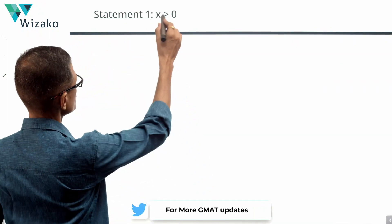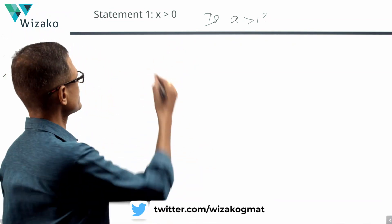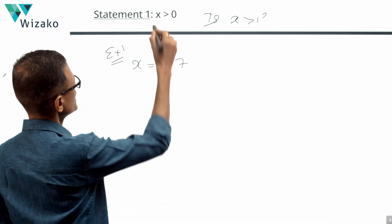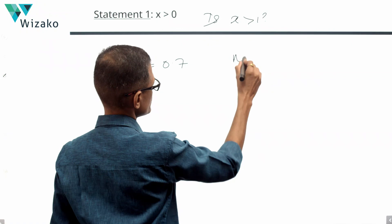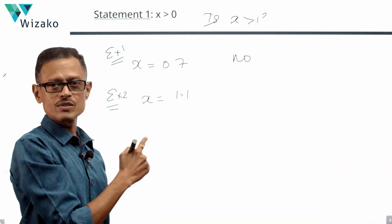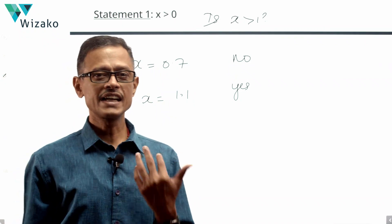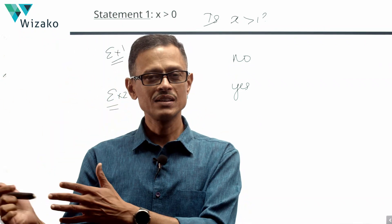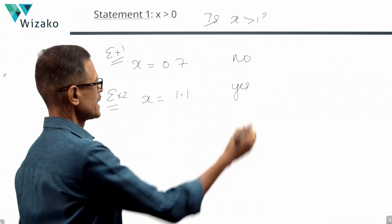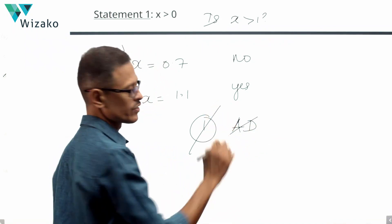Statement 1 says X is greater than 0. Our question is: Is X greater than 1? If X equals 0.7, it is greater than 0, but is it greater than 1? No. If X equals 1.1, it is greater than 0 and it is greater than 1 — that's a yes. So if a number is greater than 0, it could or could not be greater than 1. We get both a yes and a no, so a counter-example exists. Statement 1 is not sufficient. We rule out answer options A and D.